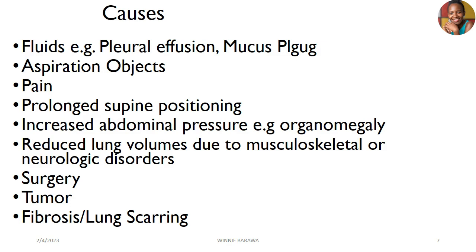Reduced lung volume due to different reasons — musculoskeletal disorders, neurological disorders, and so on — can also be a cause. Then you can have surgery, which is more of a trauma to the lung tissues, leading to side effects such as inadequate breathing patterns or low lung capacities. As a result, you may end up with atelectasis, as well as tumors and fibrosis or lung scarring.